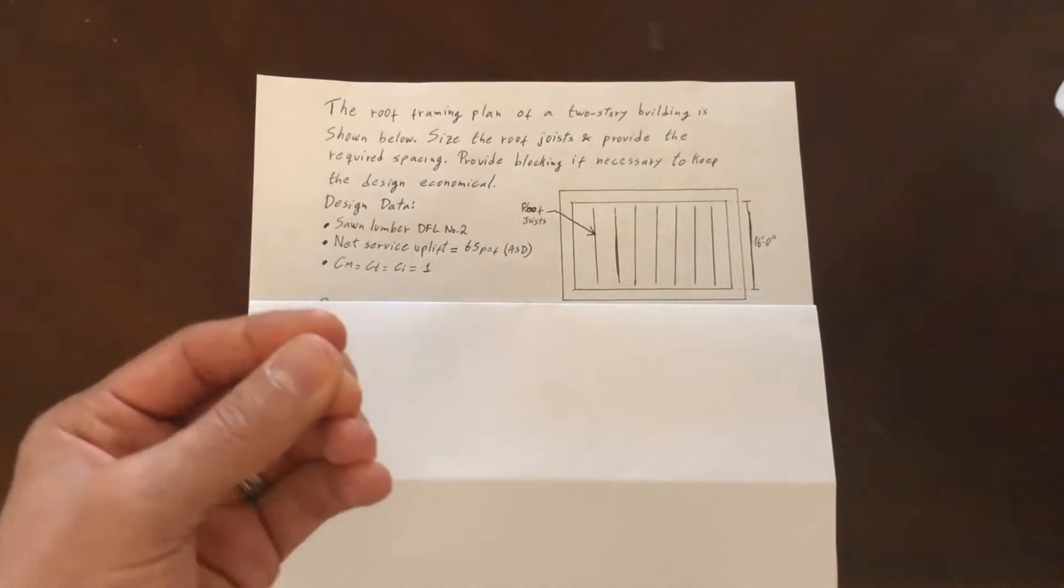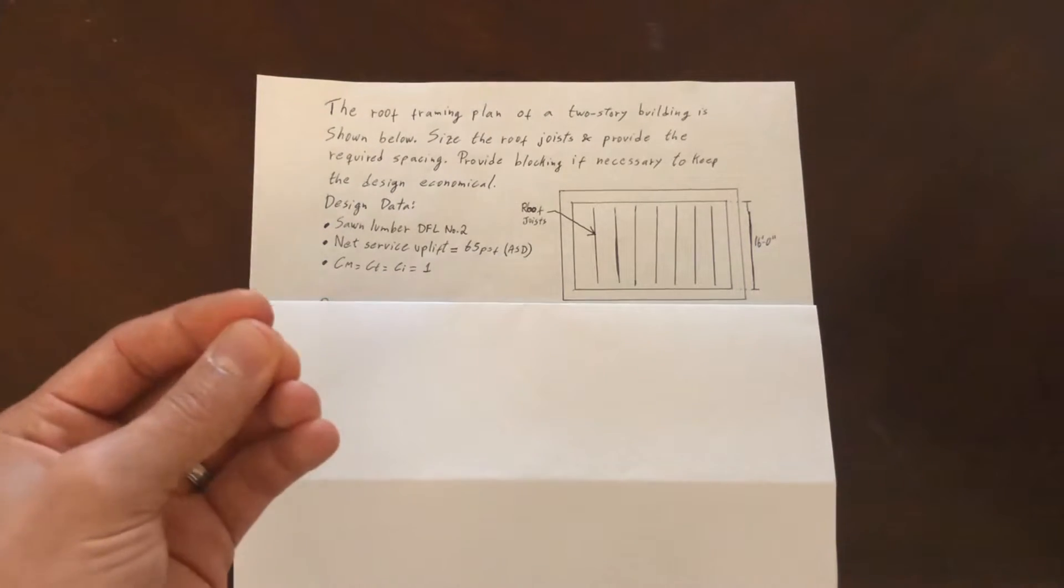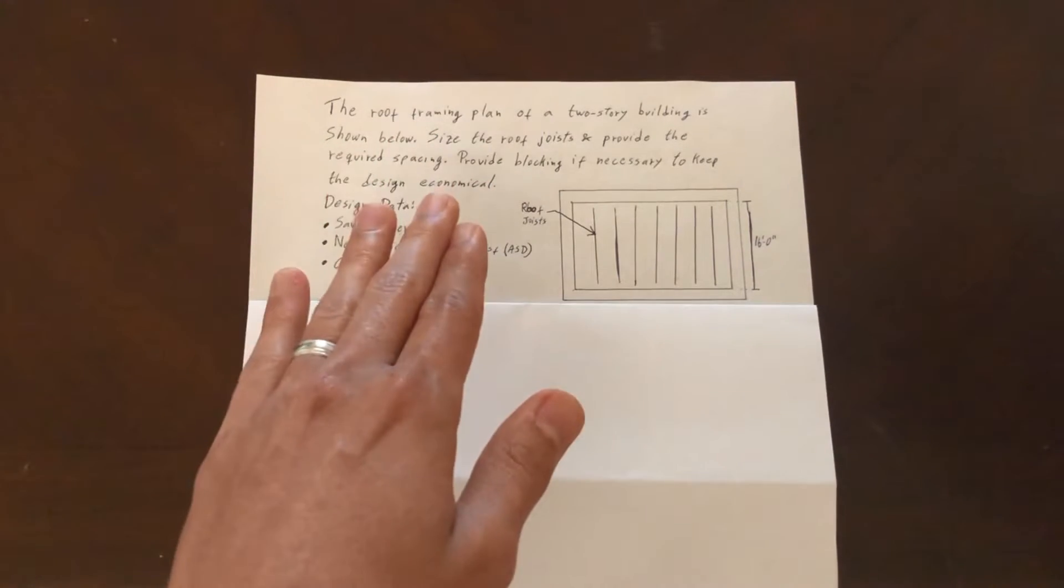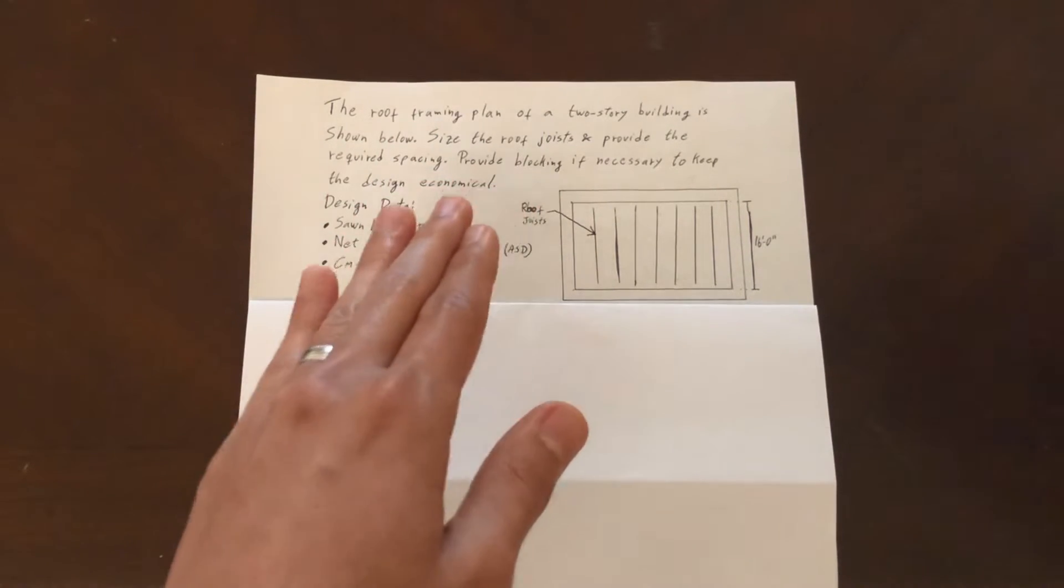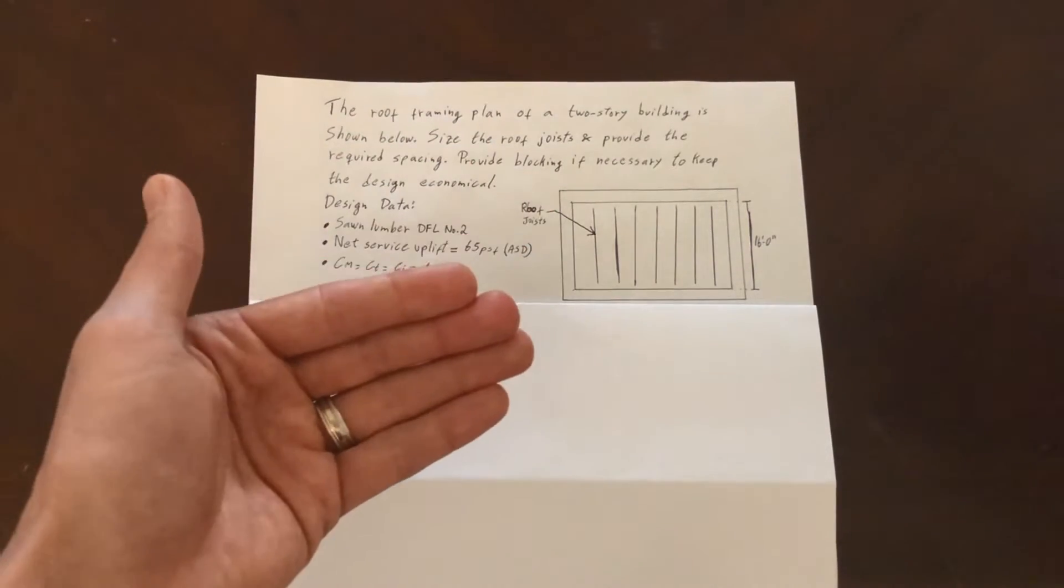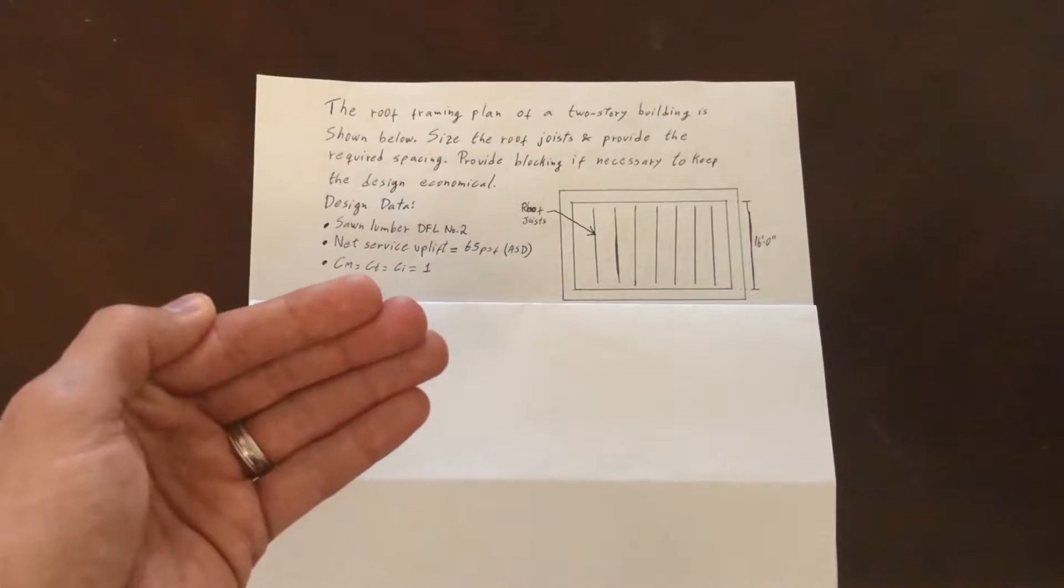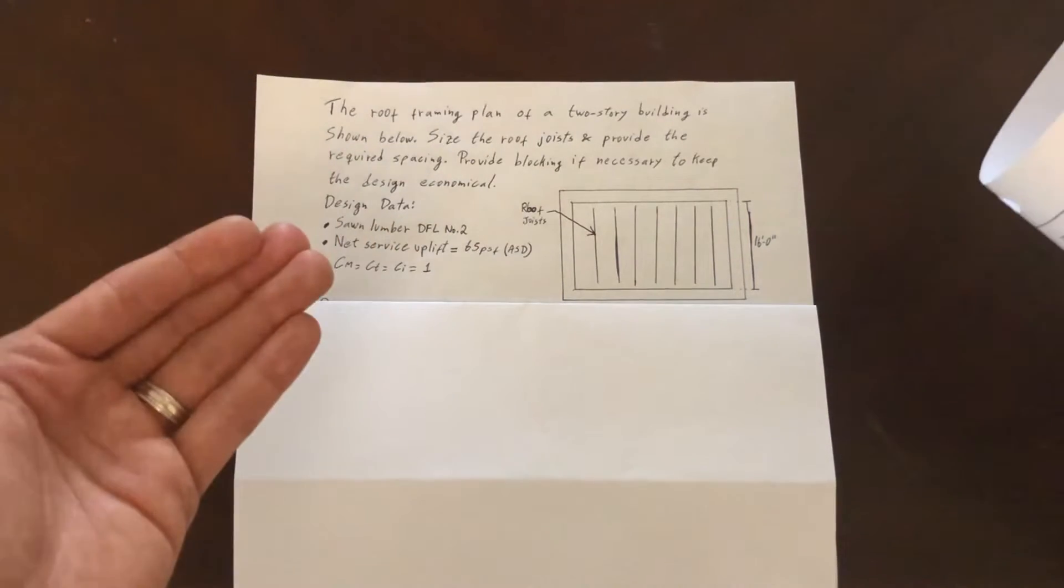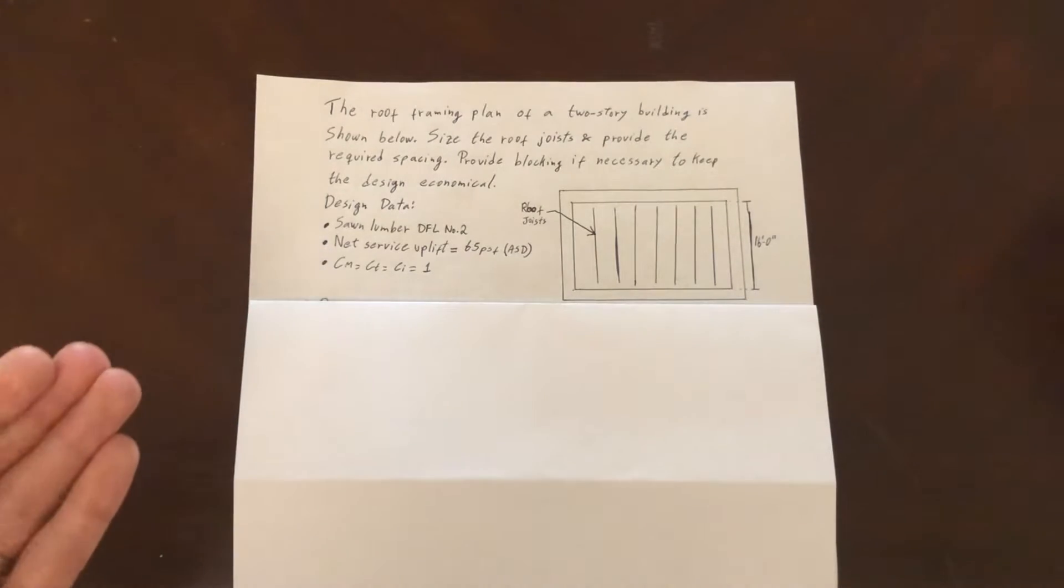That's why the problem asks to also provide blocking if necessary. In other words, let's check it first as is with this load, see if it works. If it doesn't, we'll see what controls and if by adding blocking it will help us optimize our design.